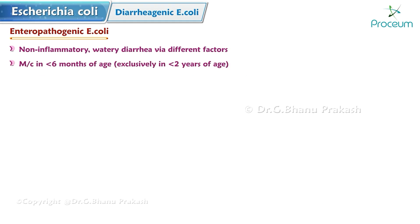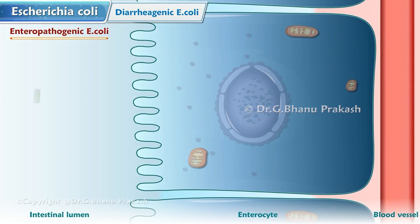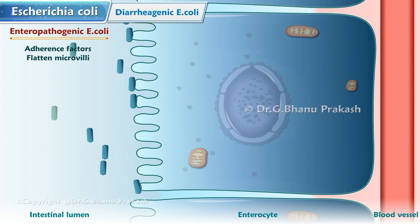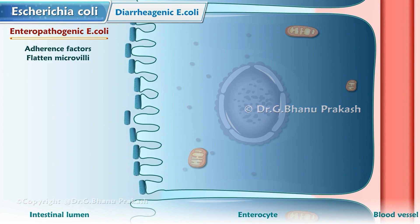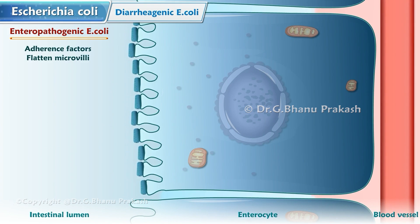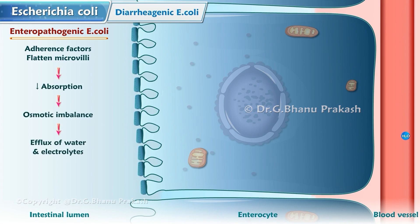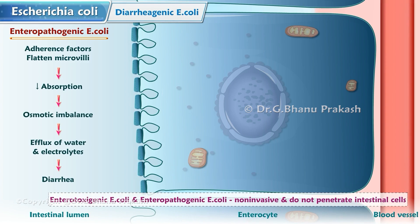Enteropathogenic E. coli (EPEC) causes non-inflammatory watery diarrhea. It is most commonly seen in children less than six months of age and almost exclusively in children younger than two years. EPEC attaches to the brush border cells of the small intestine using adherence factors. Instead of releasing enterotoxins, it uses enzymes to efface or flatten the microvilli, causing intestinal cells to lose their absorptive surfaces. This causes an osmotic imbalance, resulting in efflux of water and electrolytes leading to diarrhea. Like ETEC, EPEC is non-invasive and does not penetrate intestinal cells.